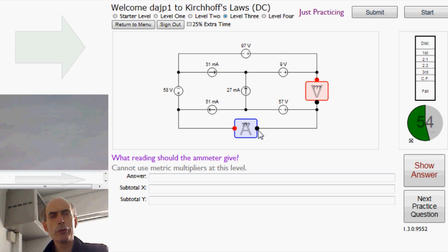So all of the current that this ammeter measures must be flowing through this 57-volt voltage source. Now, here, at this node in the circuit,